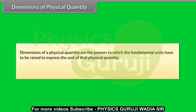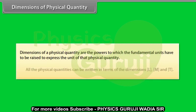Dimensions of physical quantity: Dimensions of a physical quantity are the powers to which the fundamental units have to be raised to express the unit of that physical quantity. All the physical quantities can be written in terms of dimensions L, M and T.